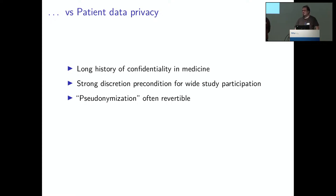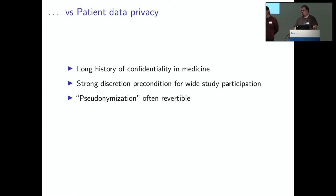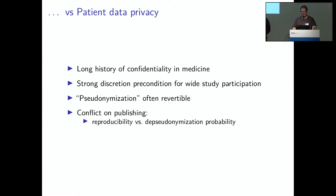Even if you pseudonymize data — deleting the patient's name and assigning a number — this is often reversible. Sometimes not even the birth date is deleted. Consider someone with a rather rare disease: if you still have their postal code, which you might want for studying cohort living conditions, the pseudonymization can be trivially reverted because you only have one patient with that illness in that postal code. This leads to a conflict: on one hand you want scientific reproducibility, but on the other you want to reduce the risk of de-pseudonymization.